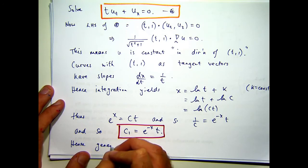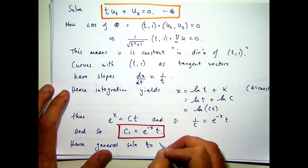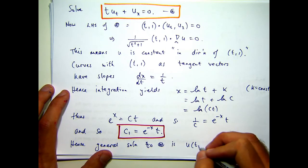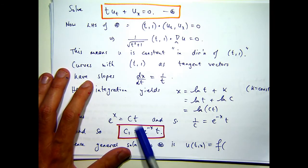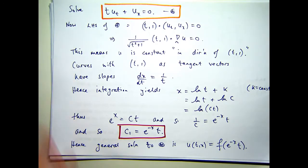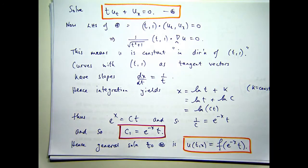So, the general solution to star is the following. It's just a function of this, where F is an arbitrary function.